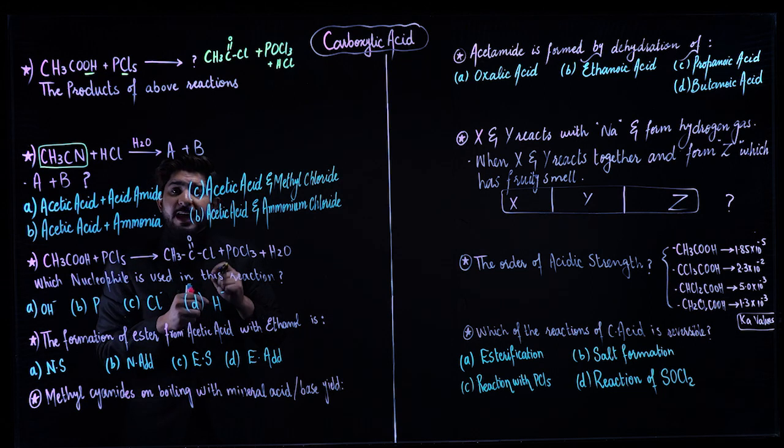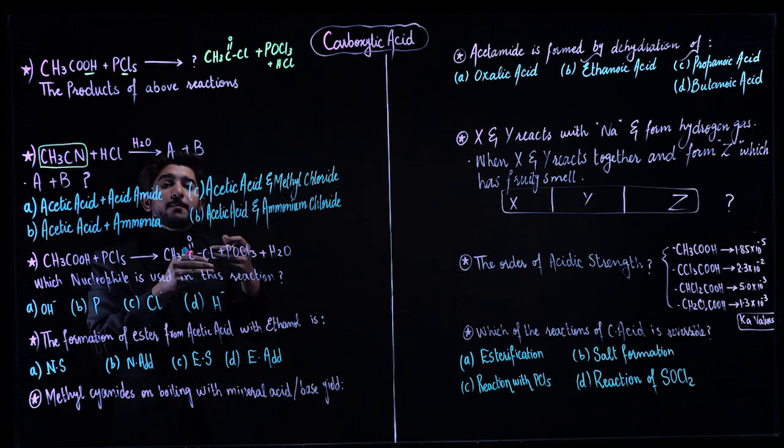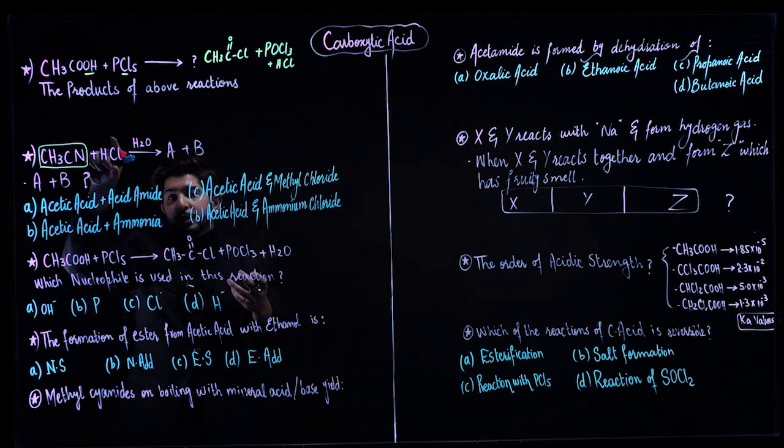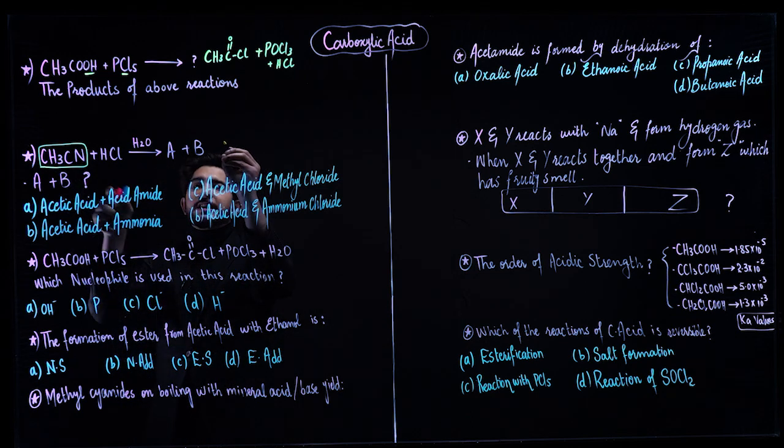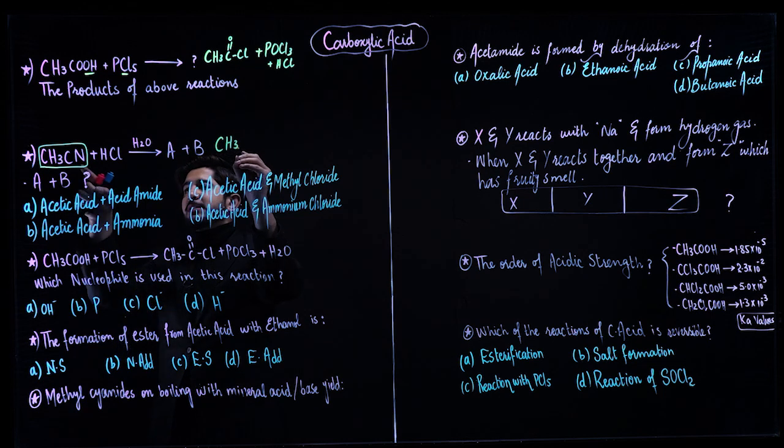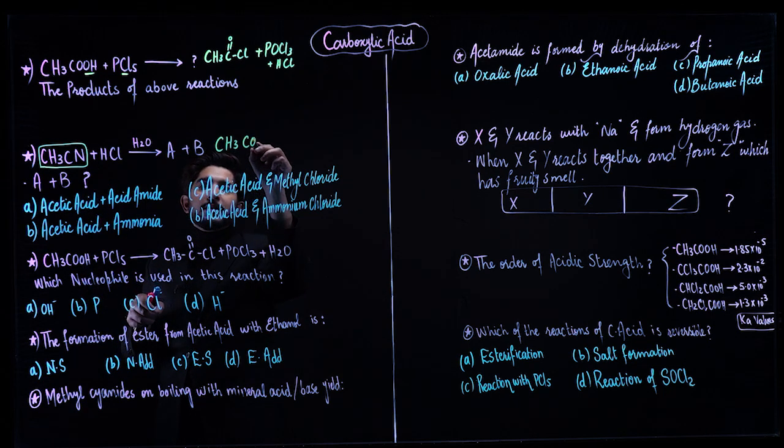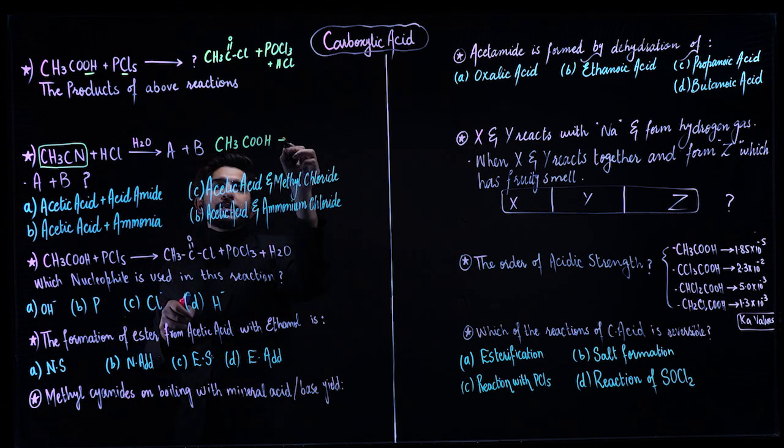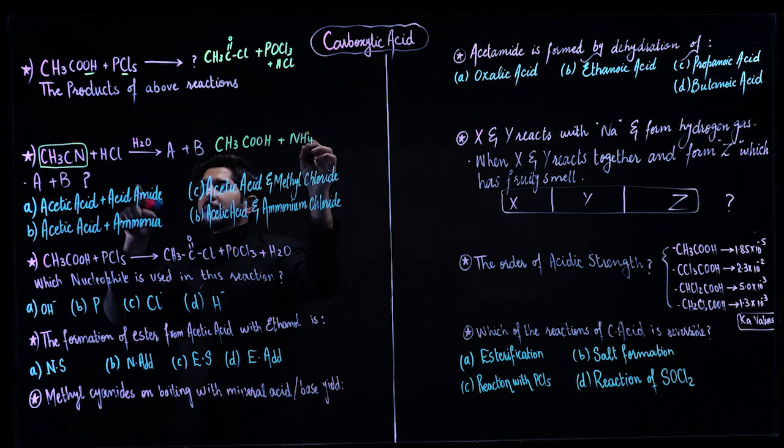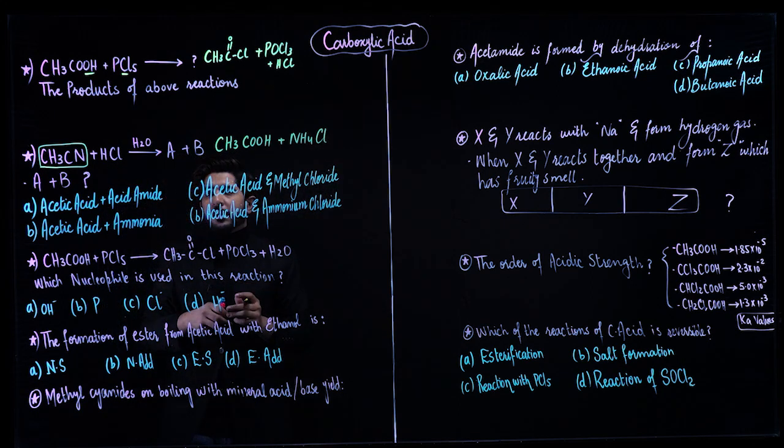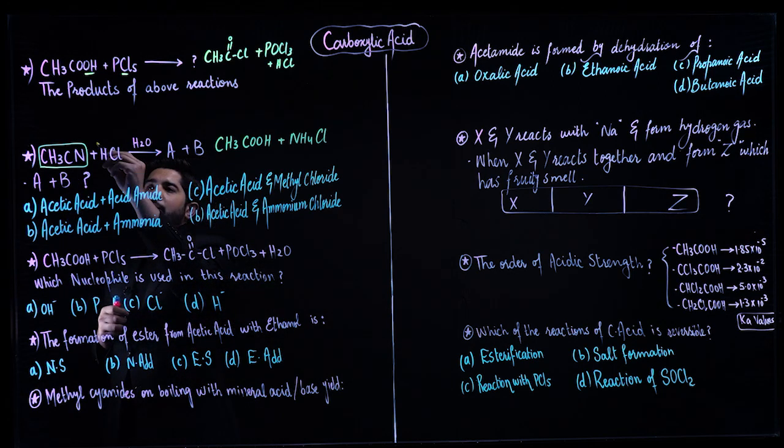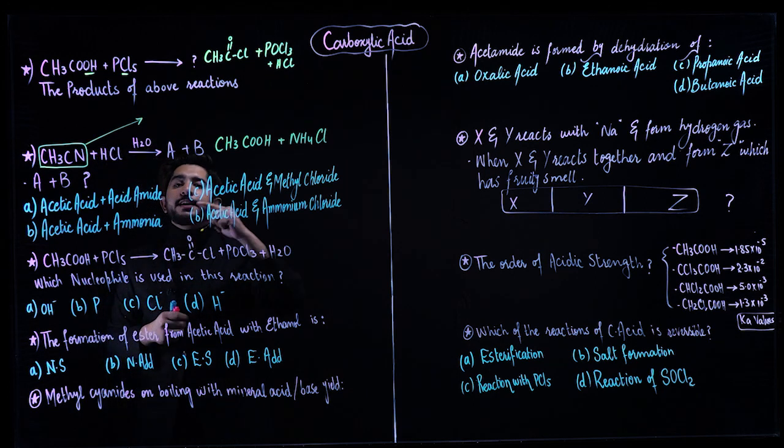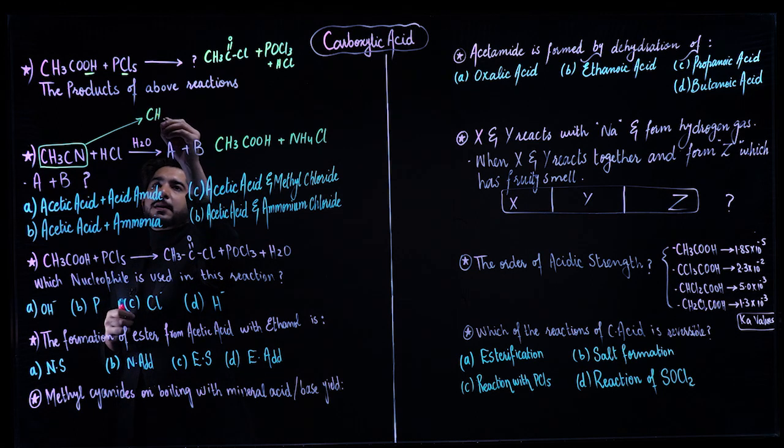Nitriles hydrolysis will give you carboxylic acid. I explained in the video that nitrogen will convert into ammonium chloride - the ammonium ion forms if acid is used, it will form ammonium chloride. So the products will be CH3, CN converts into acid.